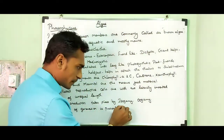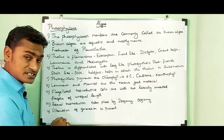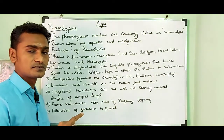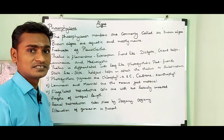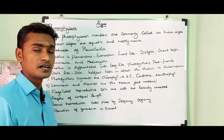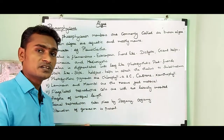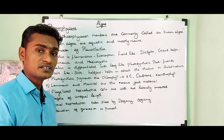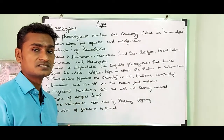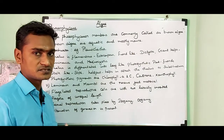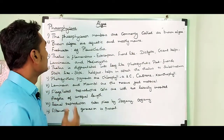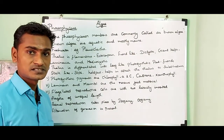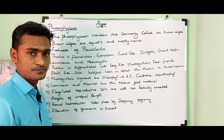Sexual reproduction takes place by isogamy and oogamy. Alternation of generation is present — the sporophytic and gametophytic generations alternate with each other, and it may be isomorphic (morphologically similar) or heteromorphic (morphologically dissimilar). Examples of Phaeophyceae algae are Laminaria, Fucus, Sargassum, Macrocystis, etc.